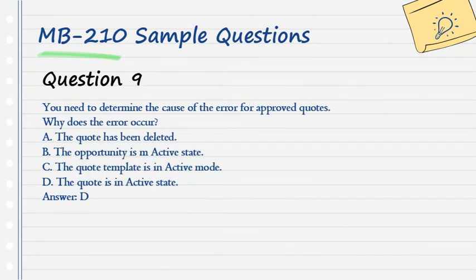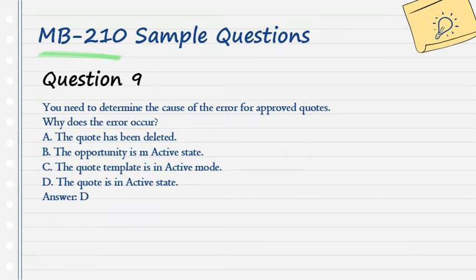Question 9. You need to determine the cause of the error for approved quotes. Why does the error occur? A. The quote has been deleted. B. The opportunity is in an inactive state. C. The quote template is in active mode. D. The quote is in active state. Answer: D.